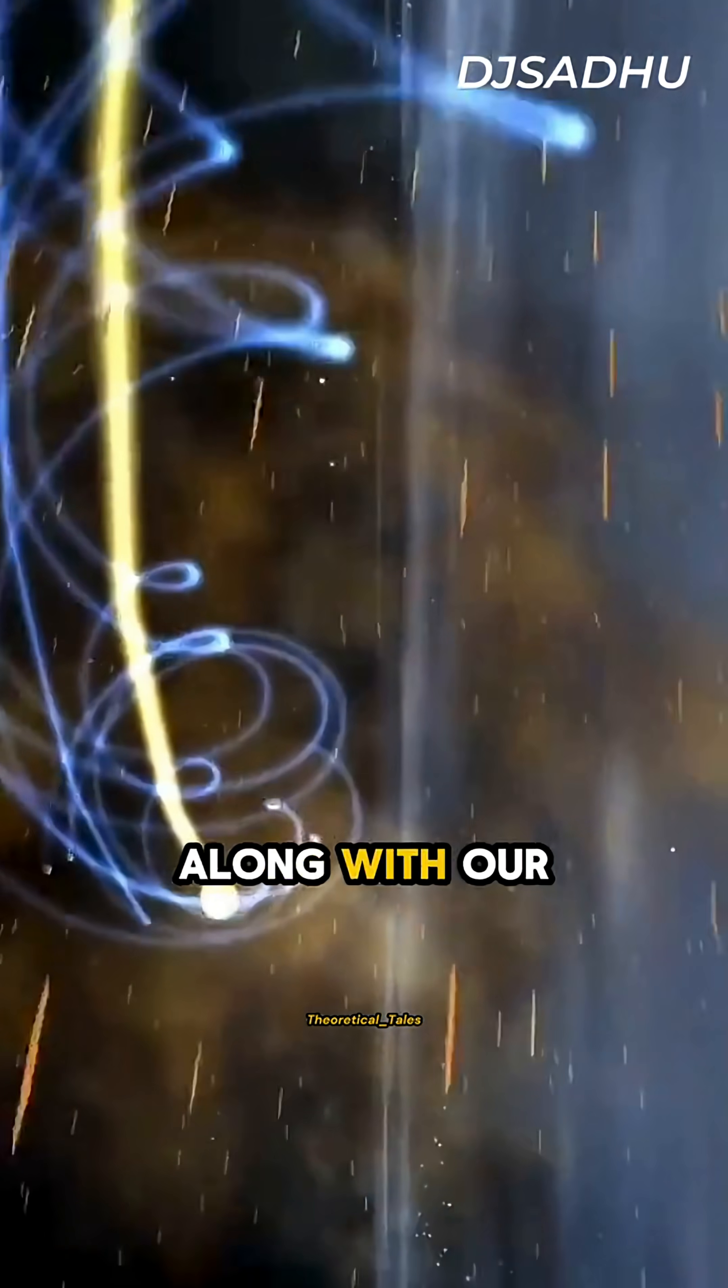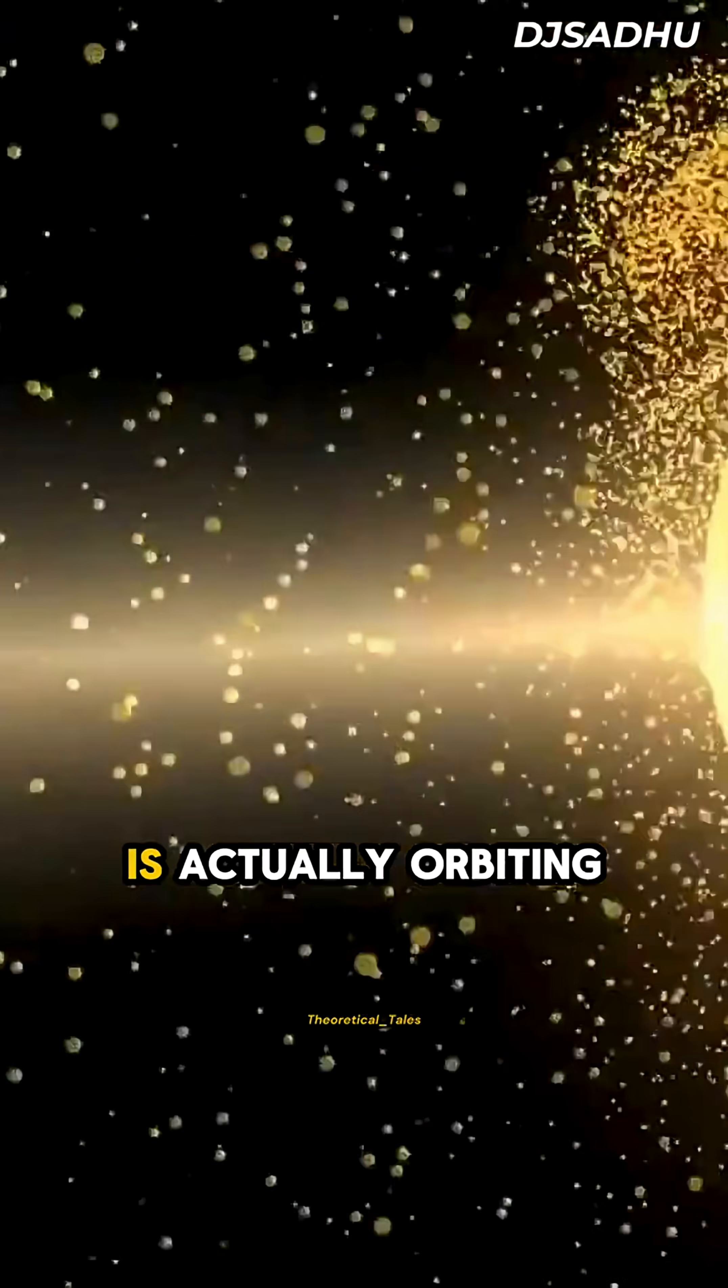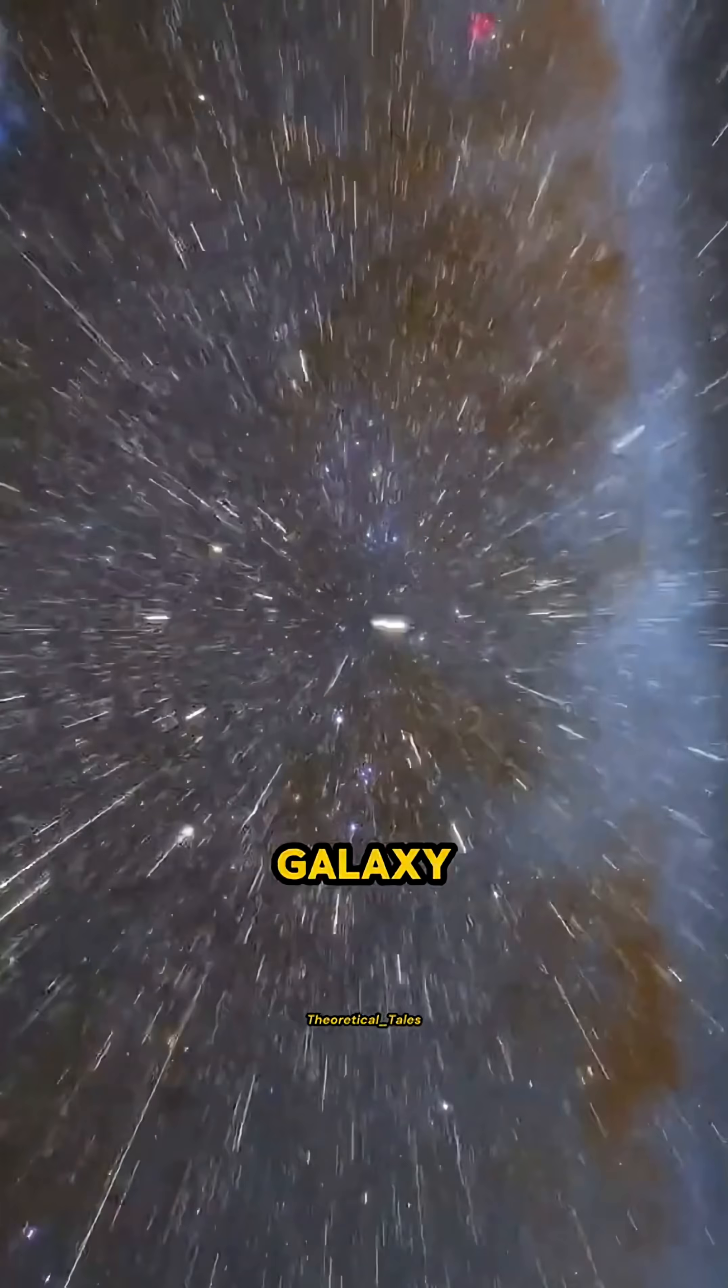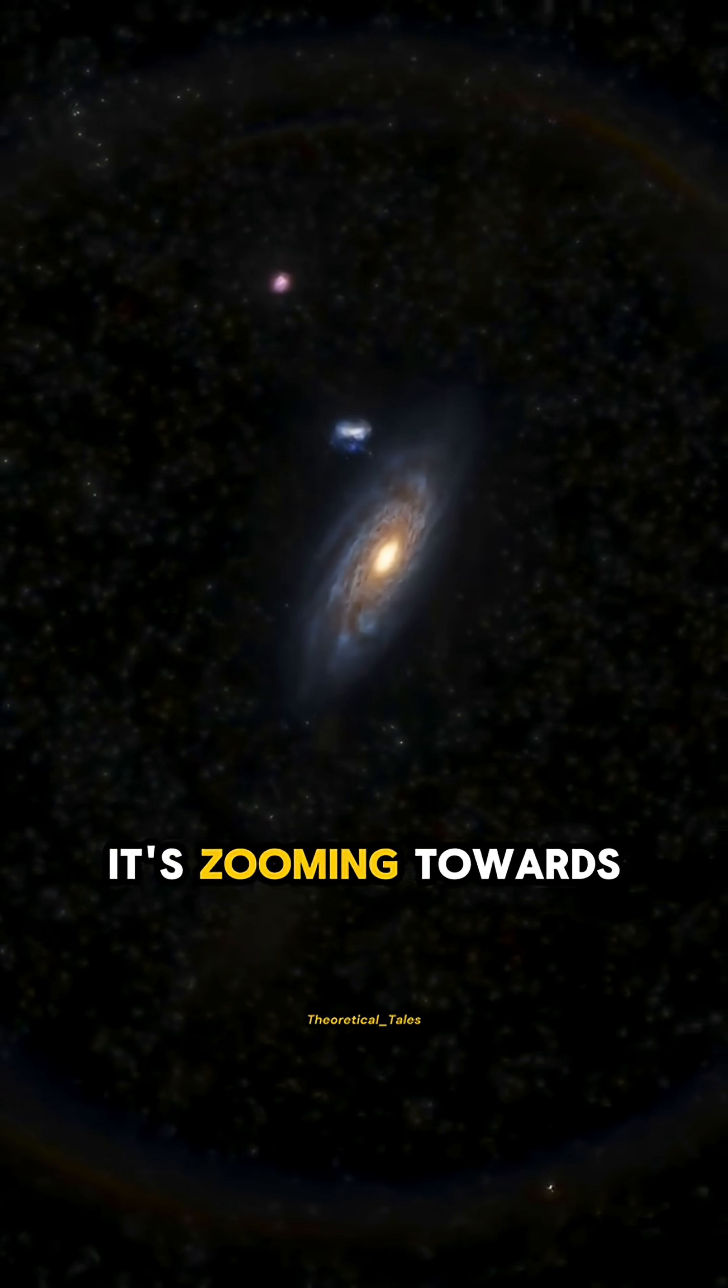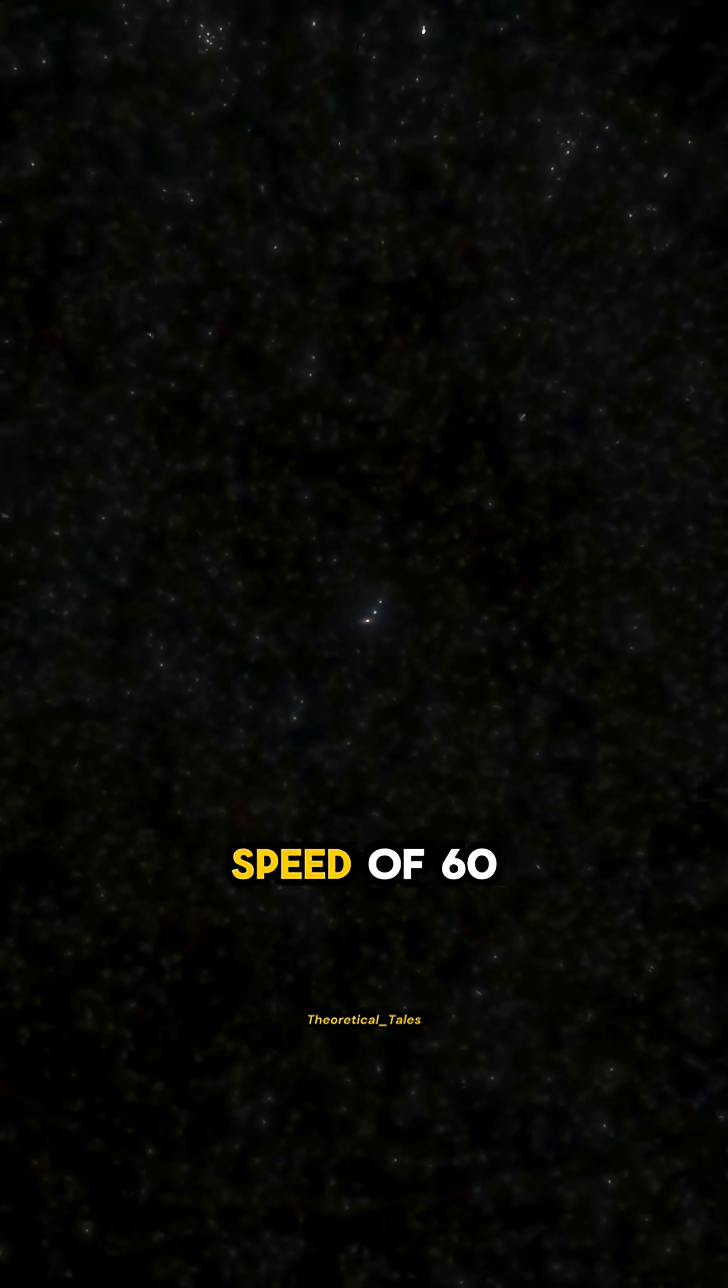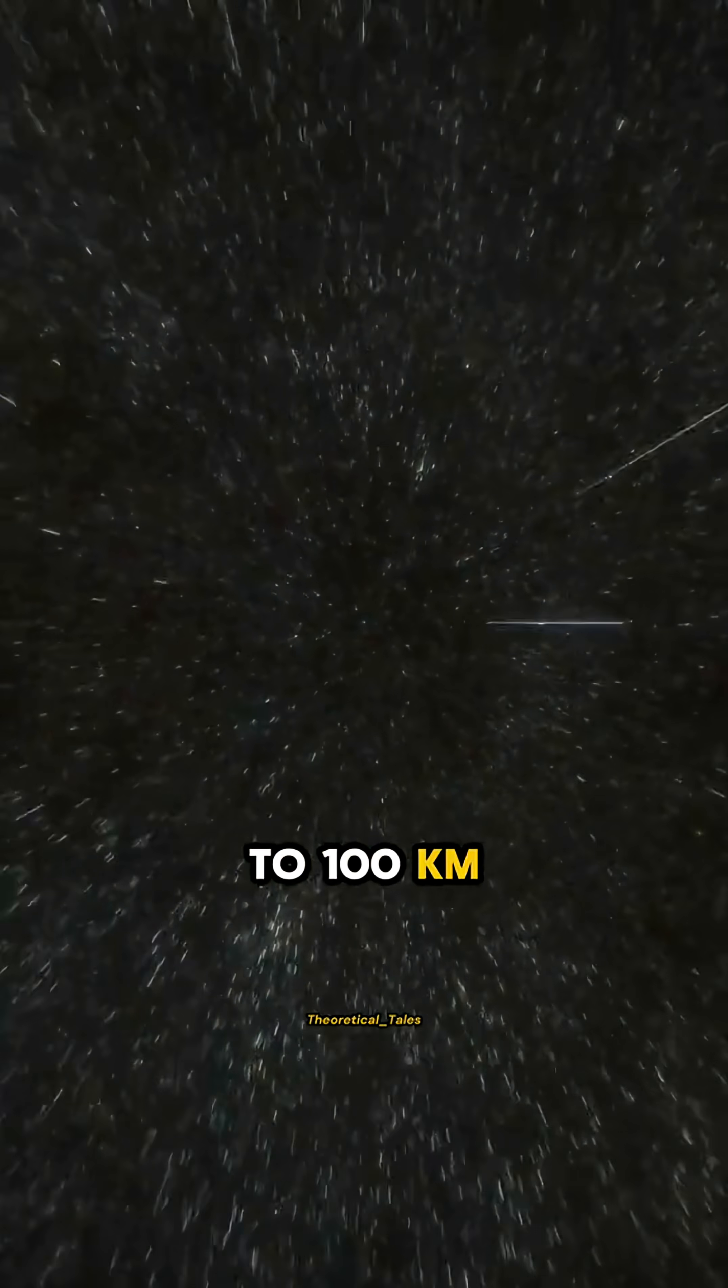But the Sun, along with our entire solar system, is actually orbiting the Milky Way galaxy. And the Milky Way itself isn't stationary either. It's zooming towards the constellation Centaurus at an astonishing speed of 60 to 100 kilometers per second.